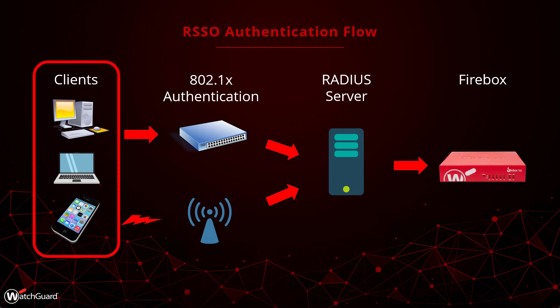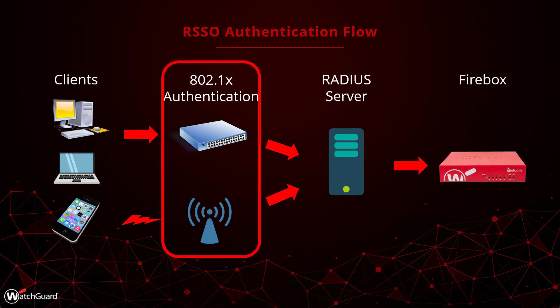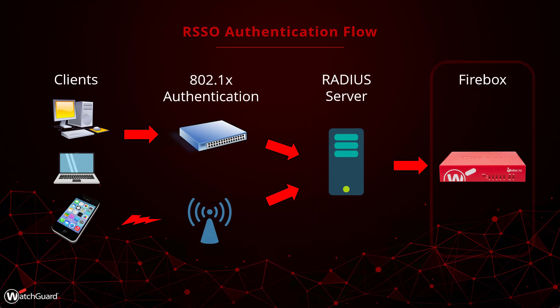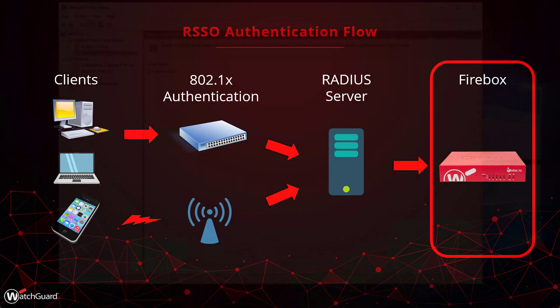Looking at a diagram of this process: first the client tries to connect to the network, either by plugging into a switch or connecting over Wi-Fi. The networking devices see that you're trying to get on the network and block your access until your credentials are forwarded to a RADIUS server for validation. Once that happens, the client is allowed on the network, and at the same time the RADIUS server forwards that authentication event — including the IP address and username — over to the firebox.